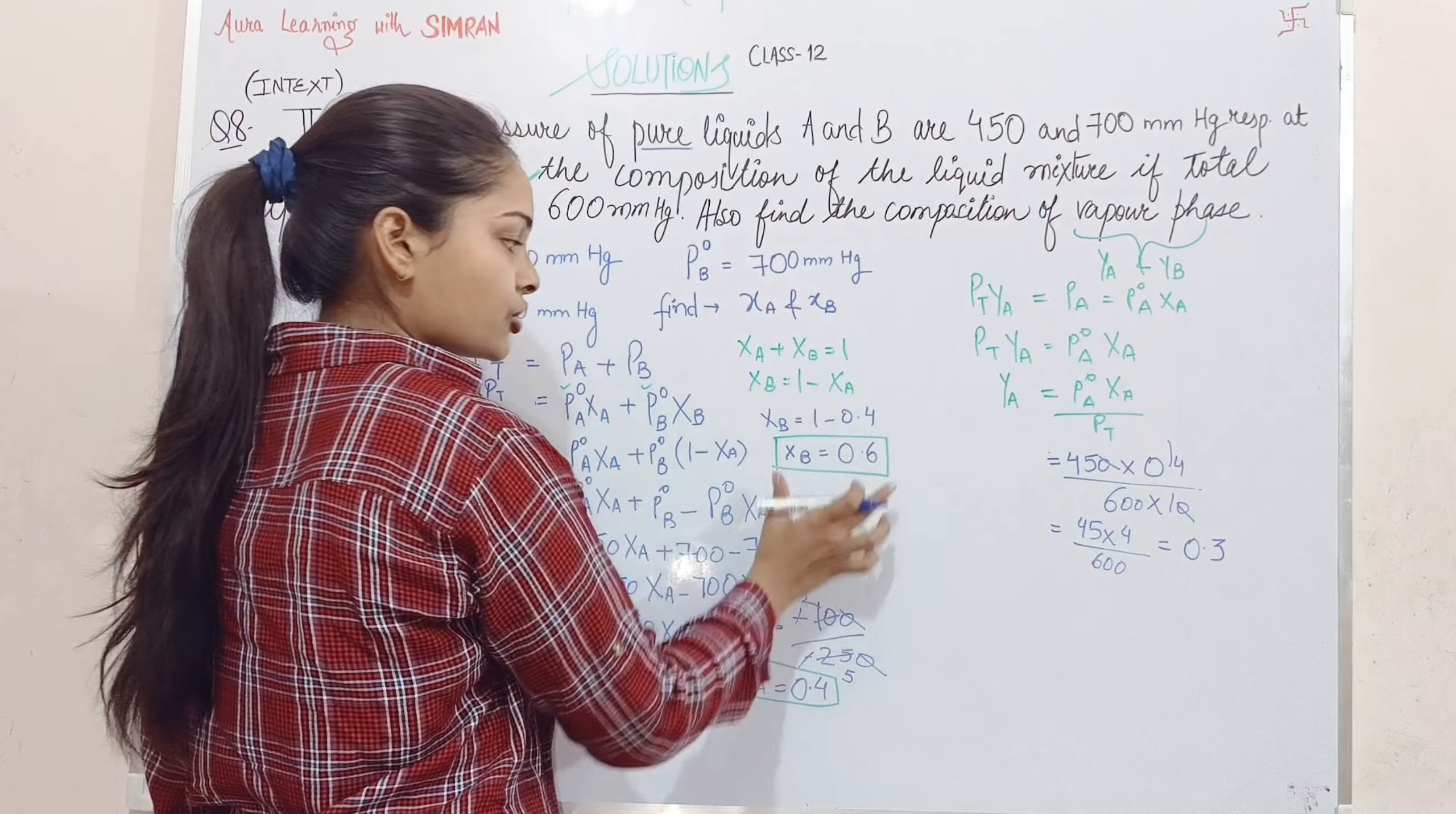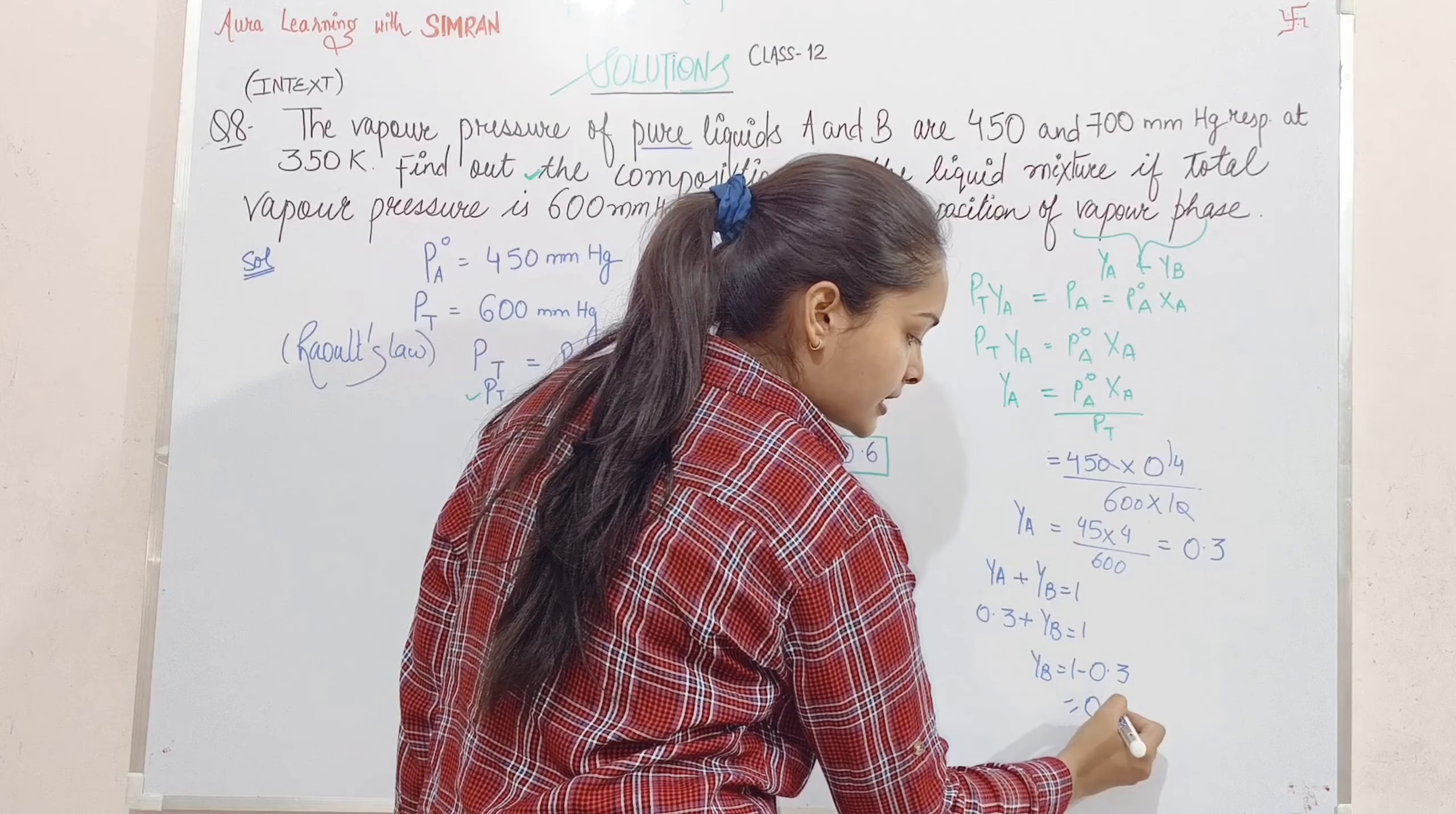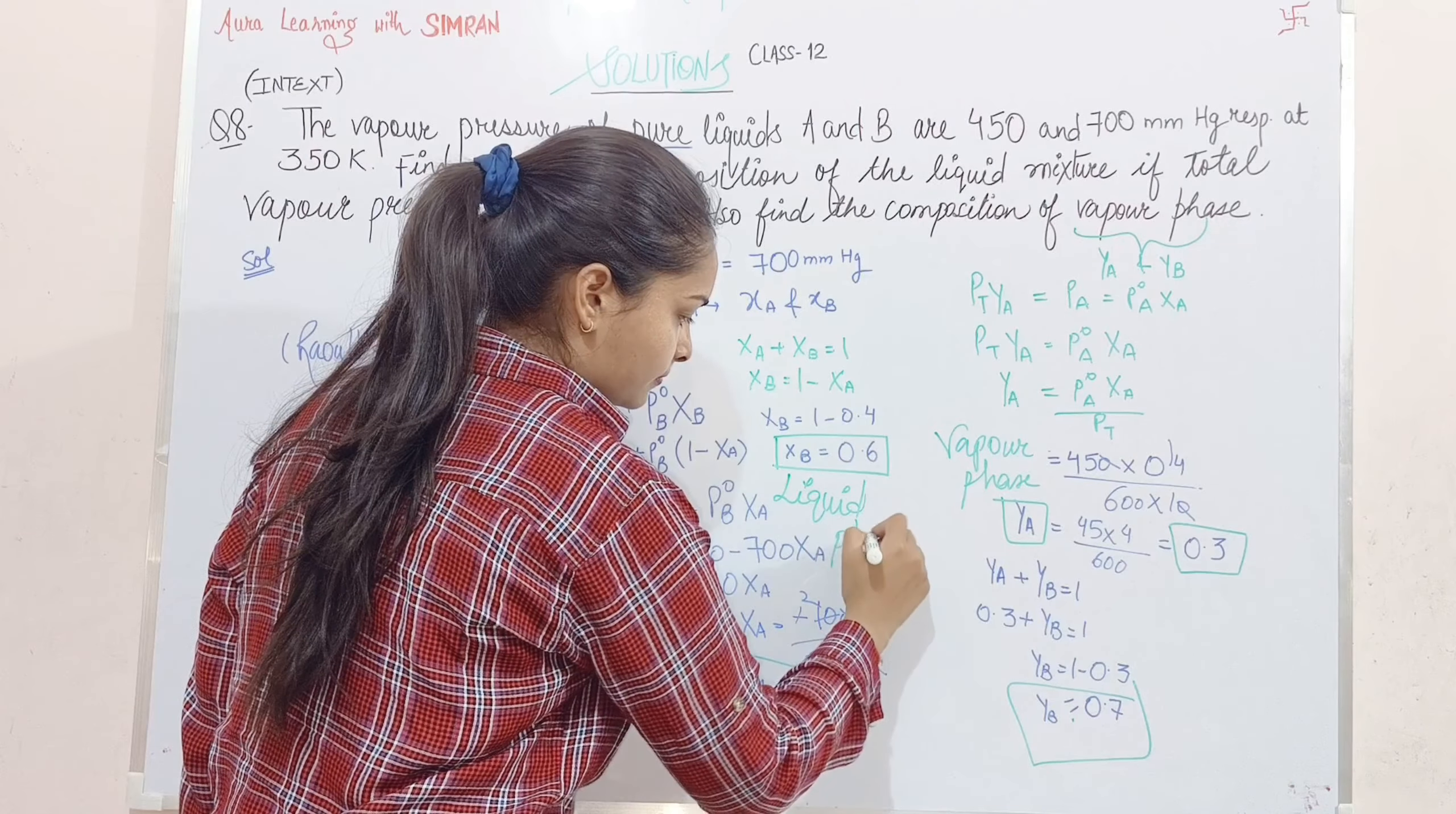The same relation: yA plus yB equals 1. yA is 0.3, so yB equals 1 minus 0.3, which equals 0.7. Final answer: yA equals 0.3 and yB equals 0.7.